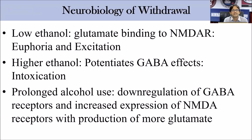Regarding neurobiology — how these changes occur over time: initially, a low quantity of alcohol leads to glutamate binding to glutamate receptors, causing feelings of euphoria and excitation. Over time, chronic and higher quantities of ethanol potentiate the GABAergic effect — a depressant effect — leading to further disinhibition and intoxication-related symptoms. Prolonged alcohol use will down-regulate GABA receptors.